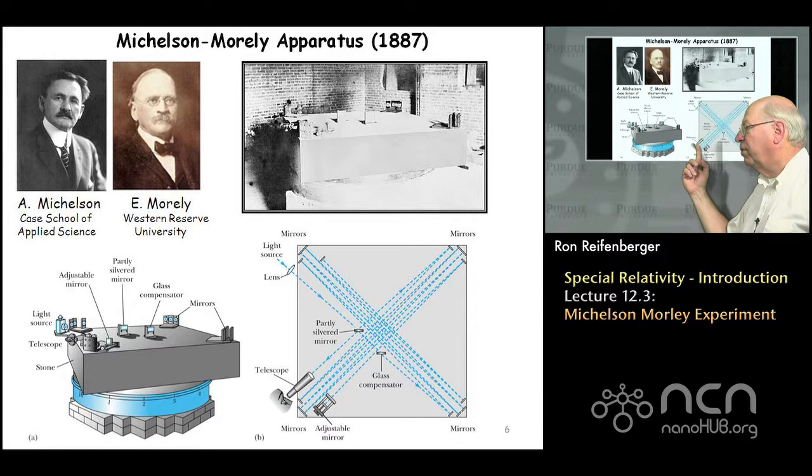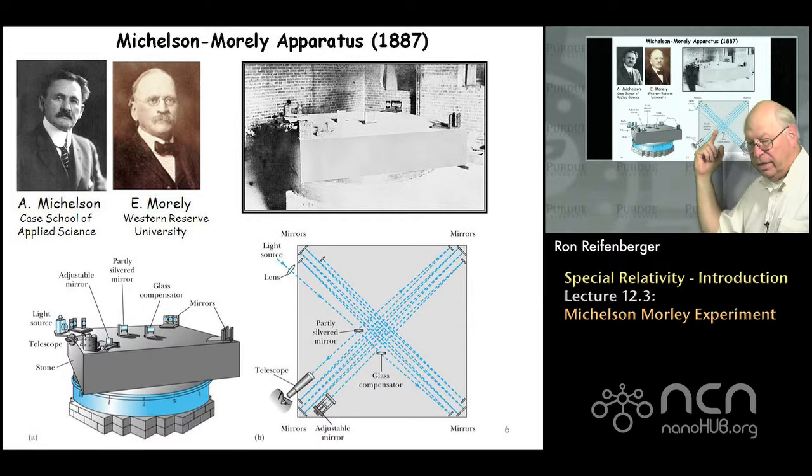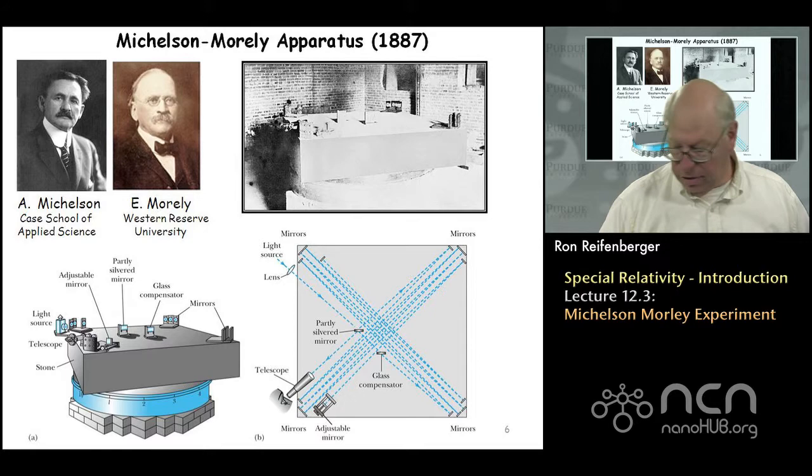Here's the viewing telescope and the viewing screen. What you're going to look for is interference patterns between the light that goes one way and the light that goes the other way. I'll try to explain that in a little bit more detail.